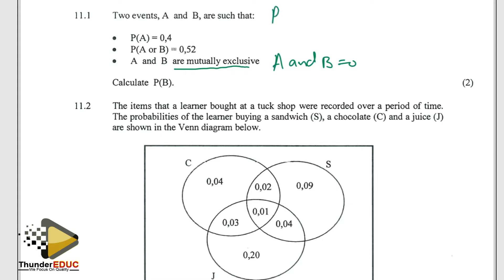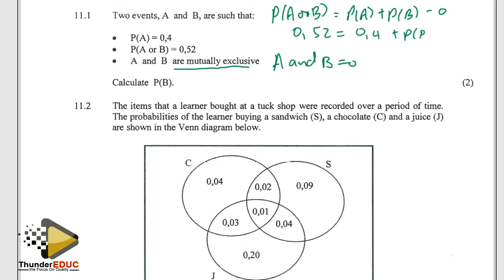From the formula of A or B on the formula page, it will be probability of A plus probability of B. So A or B is 0.52, and A is 0.4, plus B which we need. So when you subtract that, I'm going to get 0.1.